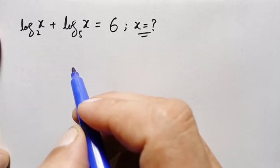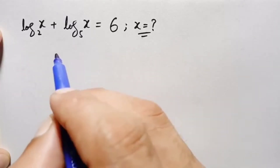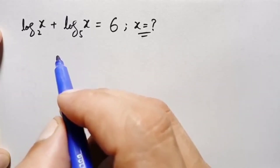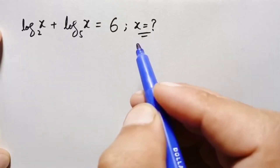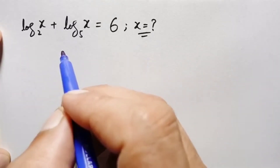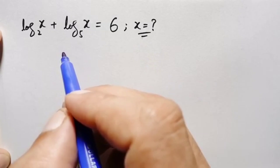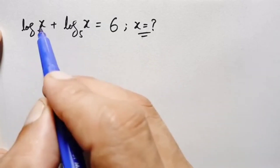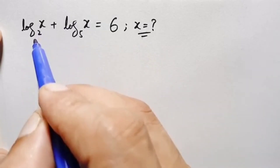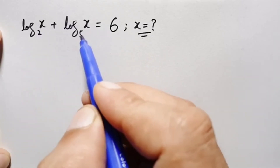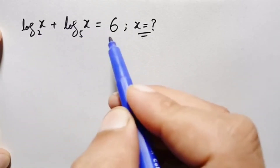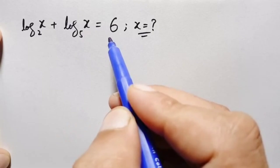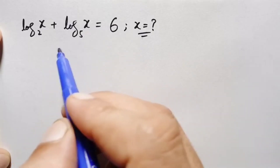Hello everyone, welcome. How to solve and find the value of x in this interesting logarithm math problem: log of x with base 2 plus log of x with base 5 is equal to 6.